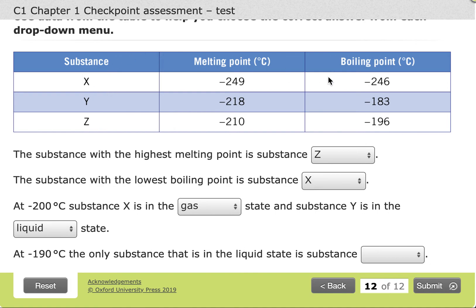For substance X, minus 190 is on the right-hand side. In other words, it is greater than the boiling point, and so we're in the gas state.